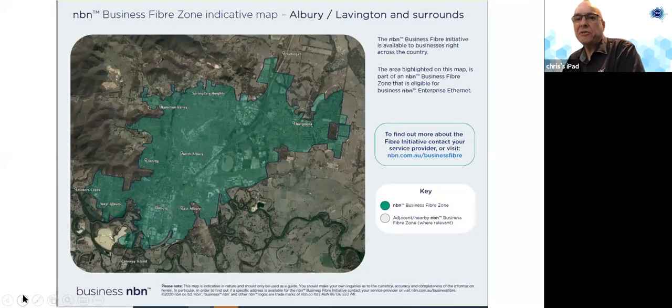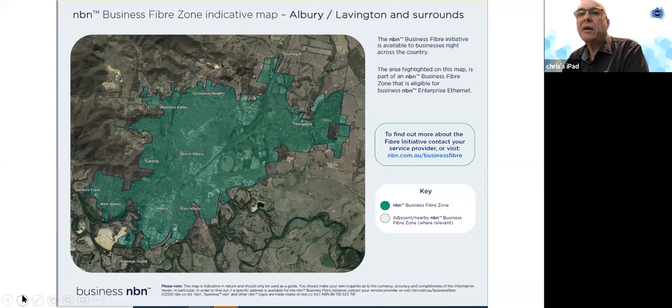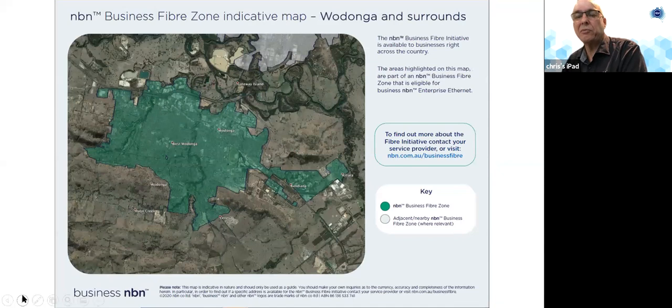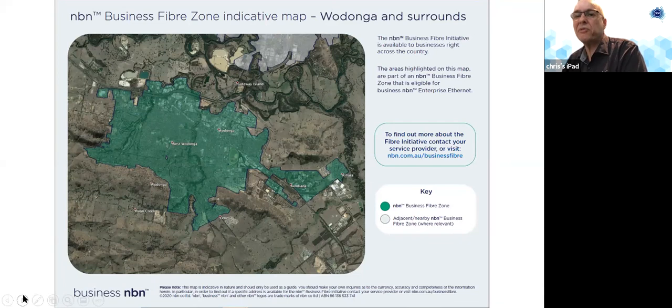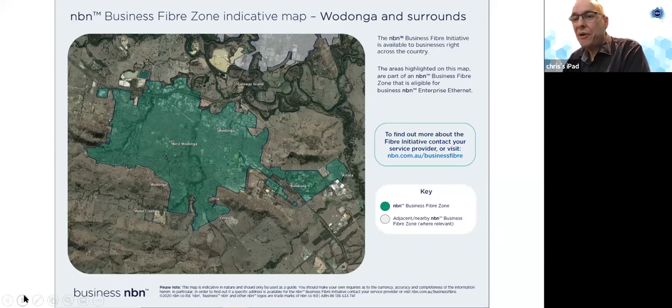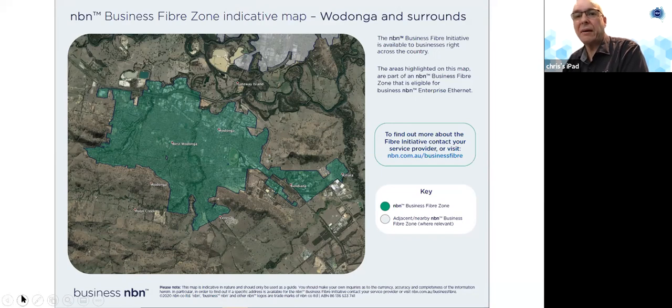I've just got a couple of slides to highlight the coverage for these maps. You can see that virtually the whole of the Albury and surrounding suburbs are covered by the business fibre zone, and the next map shows the quite extensive coverage as well across Wodonga. Individual businesses can go to the NBN business website, put in your address, and it will confirm whether you're in a business fibre zone and eligible for one of these services. This is not just the CBDs of Albury-Wodonga, it's also covering extensive suburbs and industrial precincts as well.